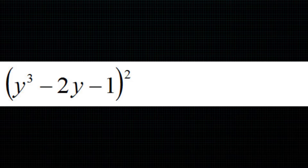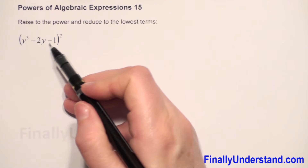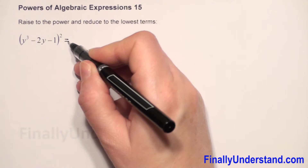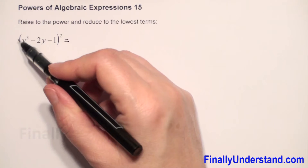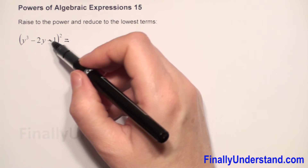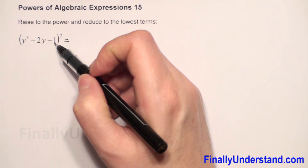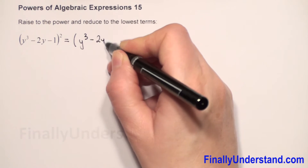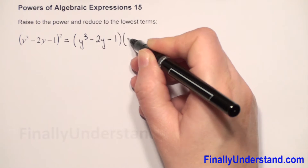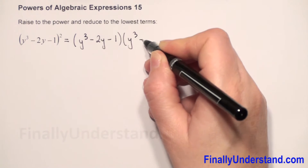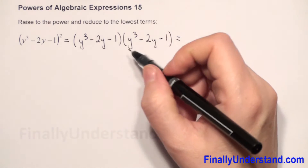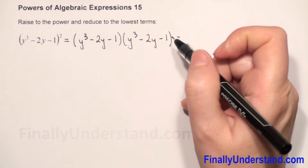We have to raise the polynomial y³ minus 2y minus 1 to the second power. We will first rewrite it as y³ minus 2y minus 1 times y³ minus 2y minus 1. Now we have a multiplication of two polynomials.